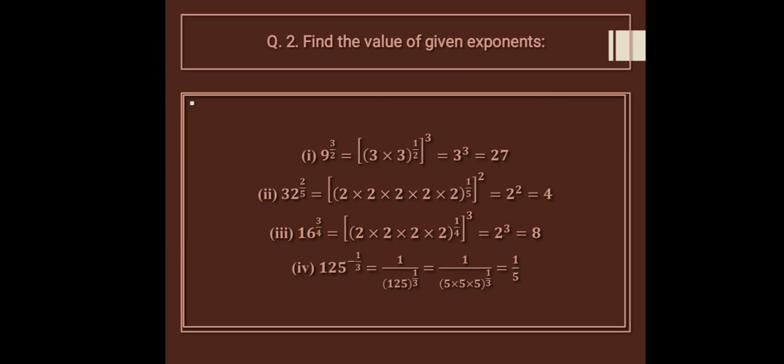Question number 3: 16 raised to the power 3 upon 4. This is similar to the previous question. 3 upon 4 equals 1 upon 4 multiplied by 3. We represent it in brackets. The 1/4th root of 16 is 2, then raised to the power 3 gives 8.